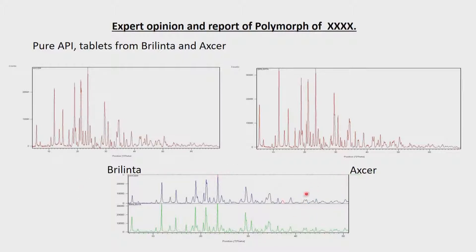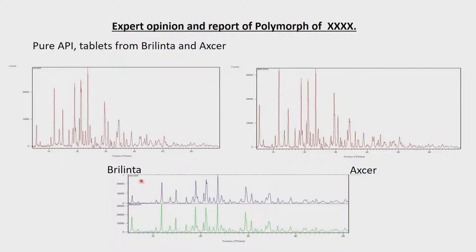This compound is in fact one polymorph among several others already reported. For this particular compound there are four or five polymorphs. The company thought they had made a polymorph different from the other two, which have been characterized as polymorph 2. The company wanted to know whether their compound is different from these two, but from the comparison and from the profile fit, these two compounds are one and the same and belong to the so-called polymorph 2.